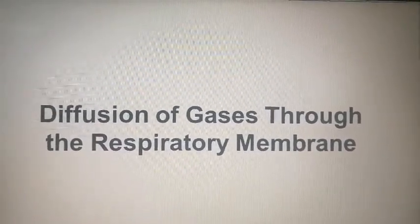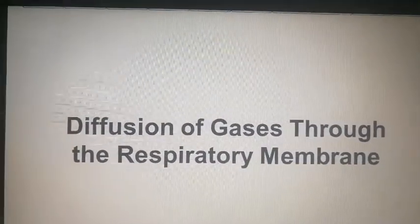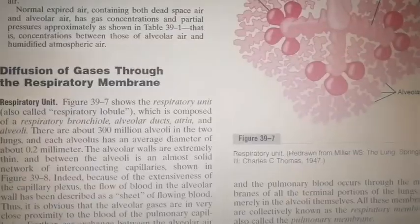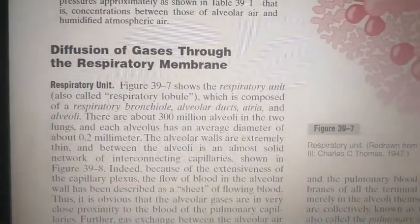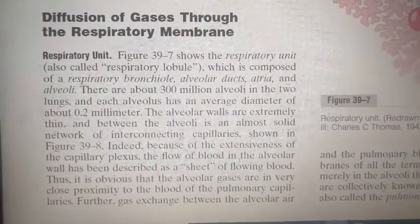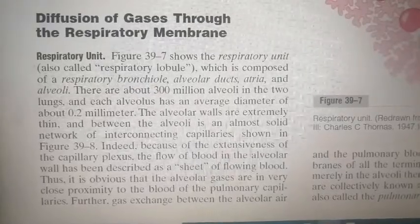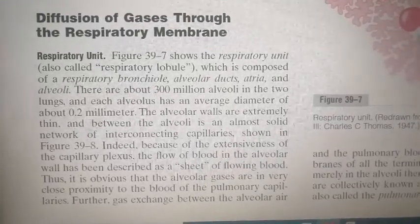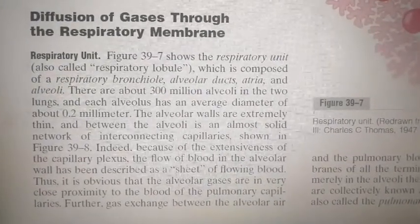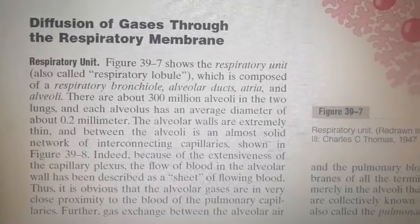Assalamu alaikum students. Today our topic of discussion is diffusion of gases through the respiratory membrane. Firstly, what is a respiratory unit? A respiratory unit includes respiratory bronchioles, alveolar duct, atria, and alveoli. There are 300 million alveoli in the two lungs, each alveolus having a diameter of 0.2 millimeter.